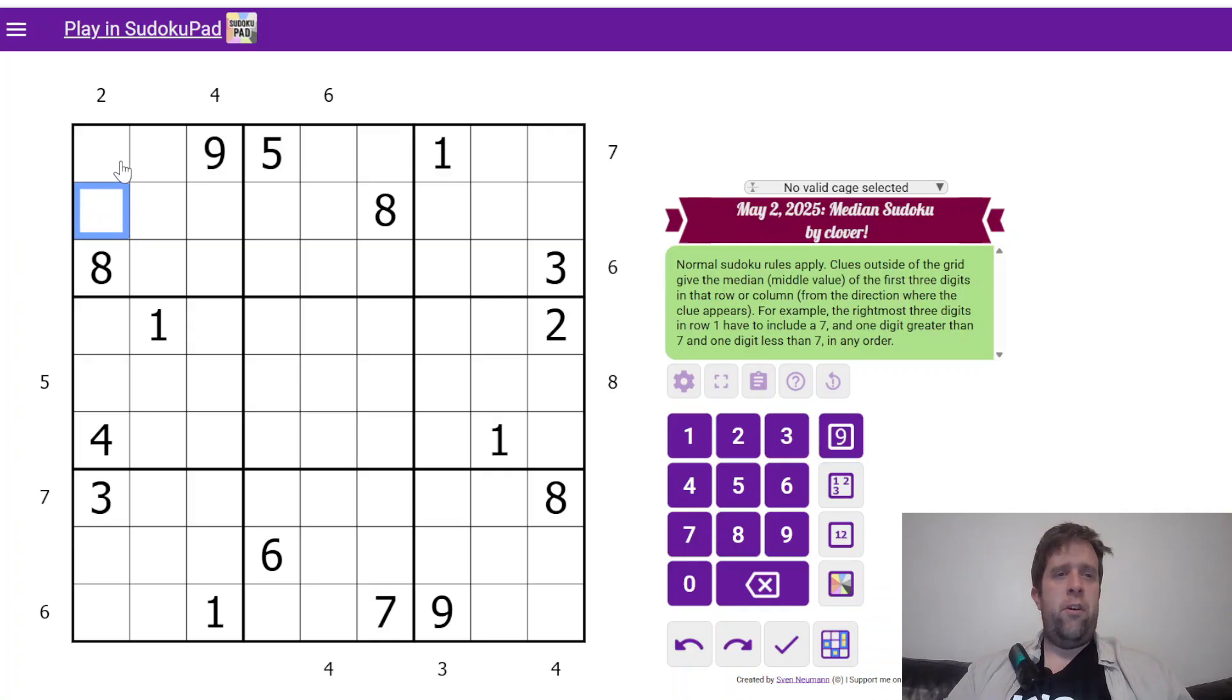In here, if the middle value is two, I also need to have a one because that's the only way I can have two be the middle. So because I can't put a one in that cell, one and two. Now because I've used one and two, how do I make four the middle? I need to have a three and a four. Three has to go there, that has to be four.